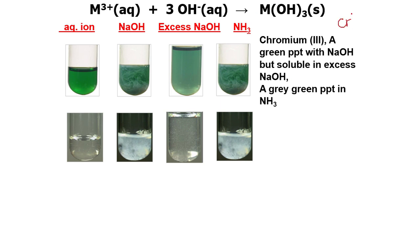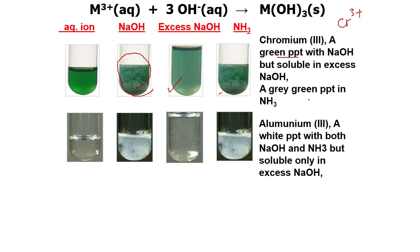Chromium 3+ (Cr3+) produces a grey-green precipitate with NaOH, but it is soluble in excess NaOH. It also produces a grey-green precipitate with NH3. Aluminium 3+ (Al3+) produces a white precipitate with both dilute NaOH and with NH3, but it is soluble in excess NaOH.